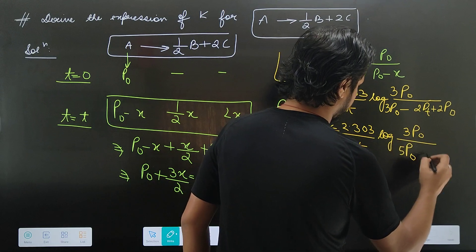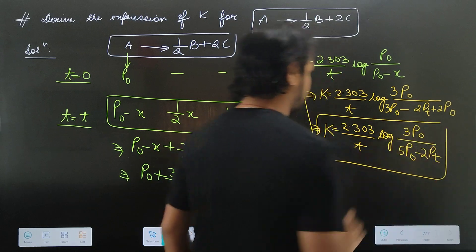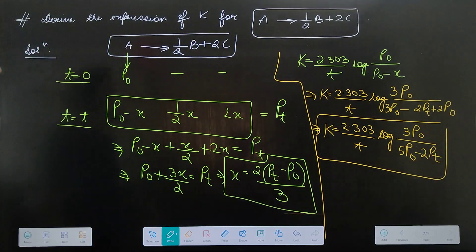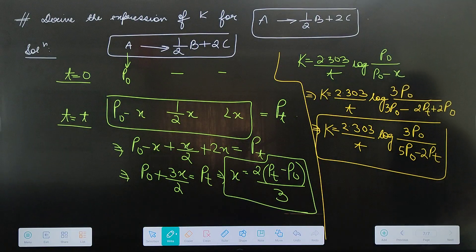The final expression: K equals 2.303 by t log of 3P0 by 5P0 minus 2Pt. These are common first order reaction patterns.